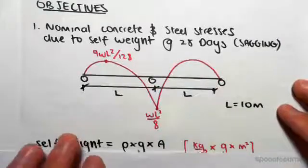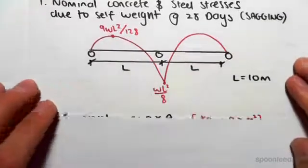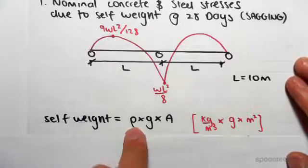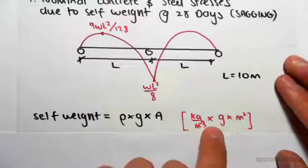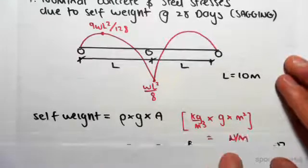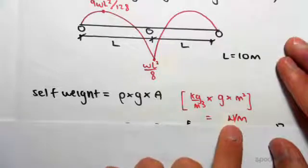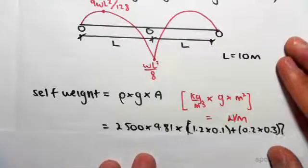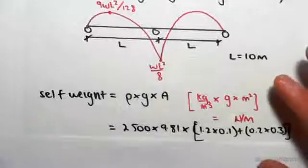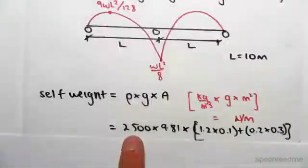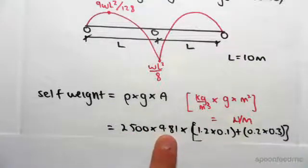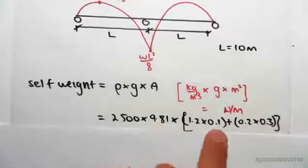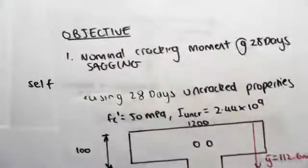Now we're going to work out the self-weight of our beam. Self-weight is just going to be the density times gravity times the area — kg/m³ × g × m² — which gives us newtons per meter, a UDL, so that's what we want to work out. For our beam, the density of reinforced concrete is 2500 kg/m³, gravity is 9.81 m/s².